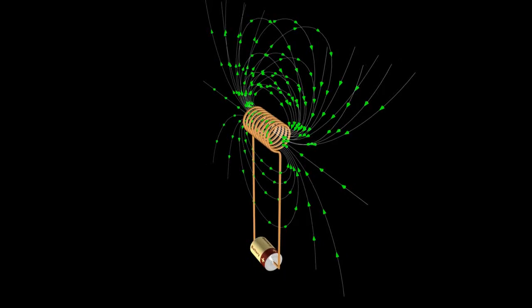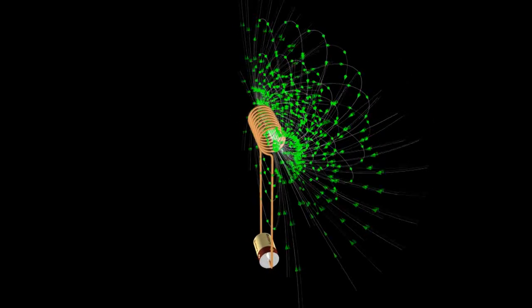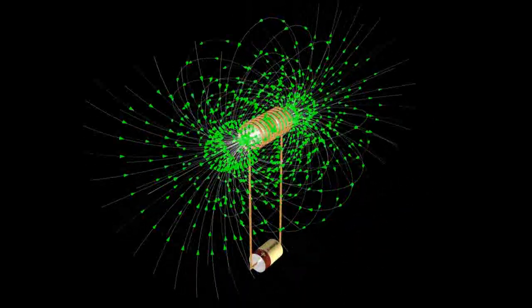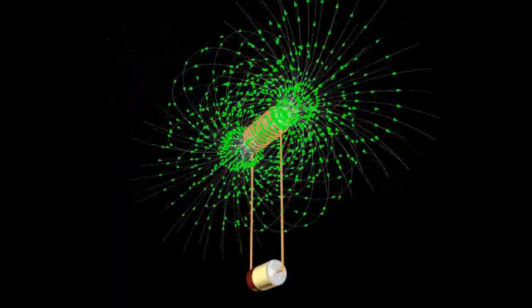The field can also be increased by adding more current or decreasing the radius of the loop. Likewise, the field can be decreased by lowering the current and increasing the radius.